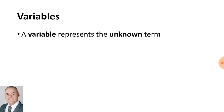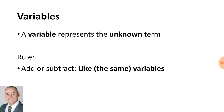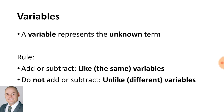A variable represents an unknown term. The rules state that we cannot add or subtract unlike terms. However, we can add and subtract like terms.